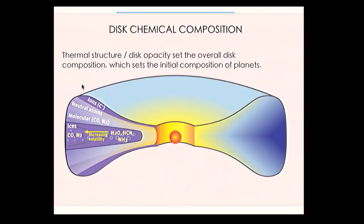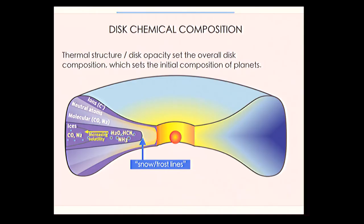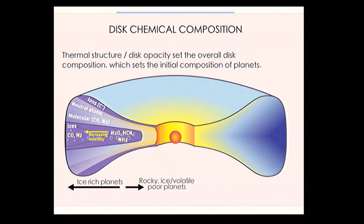If you plot the disk structure, you have an ionized surface because young stars throw fits — high-energy X-rays and UV radiation ionize the surface. But that gets attenuated, giving a molecular layer where you form CO and N₂. Then, once it gets cold enough, you form rich icy mantles — the things that eventually get incorporated into planets. Planets forming in the inner disk will be mostly rocky; those forming in the outer disk will be ice-rich.